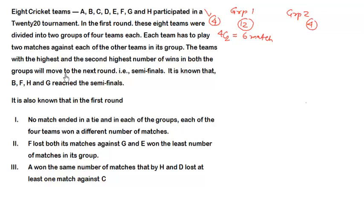The team with the highest and second highest number of wins in both groups will move to the next round — the semi-final. It is known that teams B, F, H and G reached the semi-finals. So we know which 4 teams qualified and which 4 were eliminated in the group stage. There are other facts about the first round from which we have to identify the teams in each group.